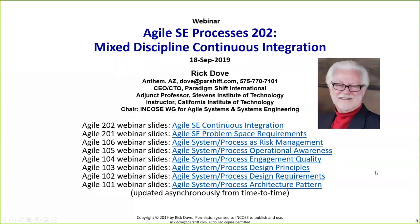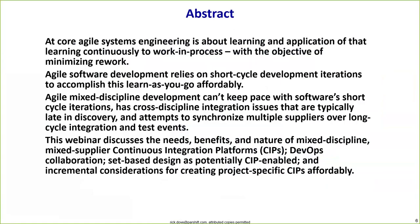We're going to talk about something that has been discovered in the Agile Systems Engineering Lifecycle Model project. It's been going on for a number of years now, where we are trying to formulate an appropriate lifecycle model for agile systems engineering by going out and finding out what people are doing that actually works — that's common to all of them — when they're successful in dealing with the need for agility.